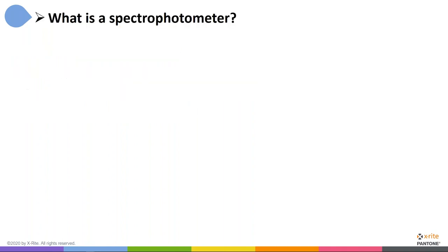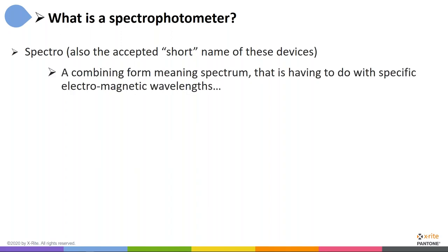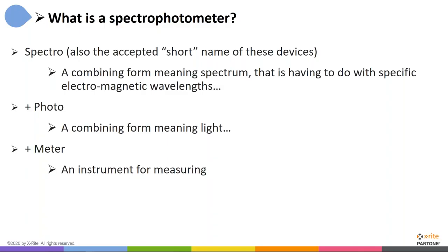Let's start with what is a spectrophotometer. We're going to do a bit of linguistics about that very complex word. It's really three words put together. Spectro, which is also accepted as the short name of these devices, kind of like my name is Timothy but my shortened name is Tim. The shortened name is spectro. Spectro means a combining form meaning spectrum, having to do with specific electromagnetic wavelengths. Plus photo, which essentially means light, and meter, which is an instrument for measuring.